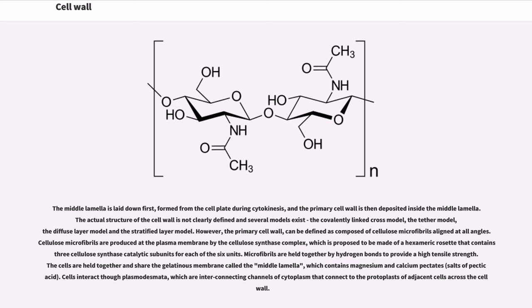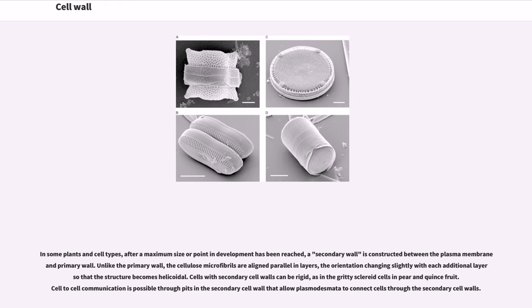Microfibrils are held together by hydrogen bonds to provide a high tensile strength. The cells are held together and share the gelatinous membrane called the middle lamella, which contains magnesium and calcium pectates, salts of pectic acid. Cells interact through plasmodesmata, which are interconnecting channels of cytoplasm that connect to the protoplasts of adjacent cells across the cell wall. In some plants and cell types, after a maximum size or point in development has been reached, a secondary wall is constructed between the plasma membrane and primary wall. Unlike the primary wall, the cellulose microfibrils are aligned parallel in layers, the orientation changing slightly with each additional layer so that the structure becomes helicoidal. Cells with secondary cell walls can be rigid, as in the gritty sclereid cells in pear and quince fruit. Cell-to-cell communication is possible through pits in the secondary cell wall that allow plasmodesmata to connect cells through the secondary cell walls.